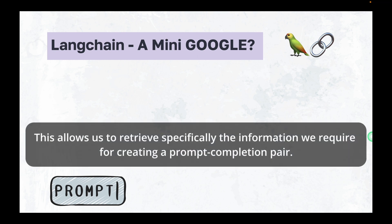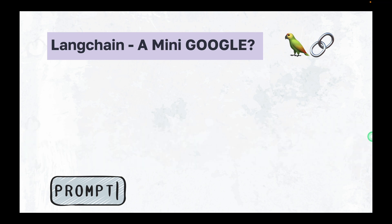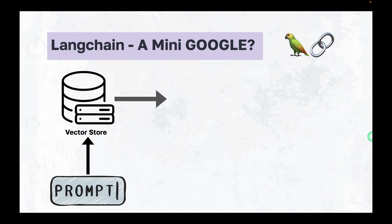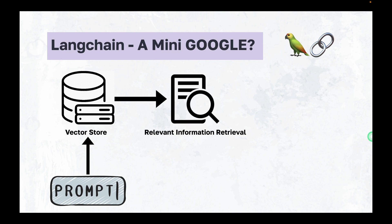This allows us to retrieve specifically the information we require for creating a prompt completion pair. Now we input a prompt in our chatbot which is powered by LangChain. It will search the vector store for relevant information. You can think of it as a small Google or a mini Google, and this is only for your document.